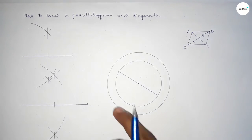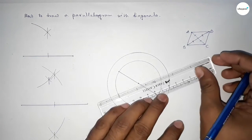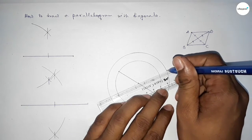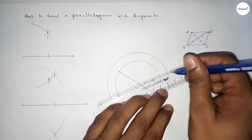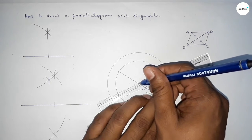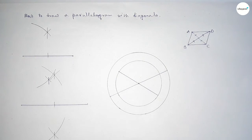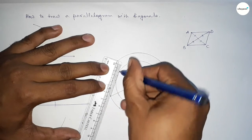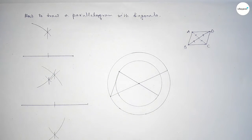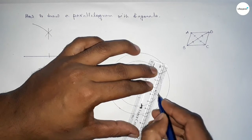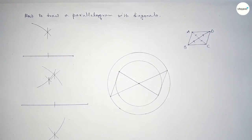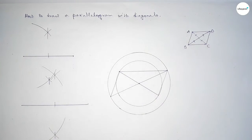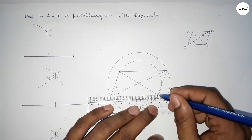Now drawing a diameter of the smaller circle, and then drawing another diameter of the greater circle which represents the 8 centimeter diagonal. Joining the sides on both ends.